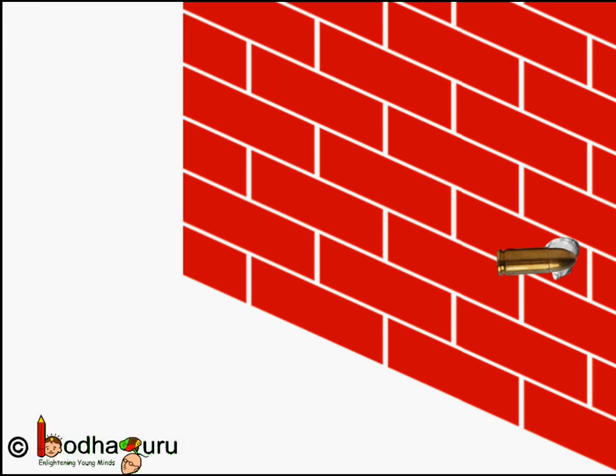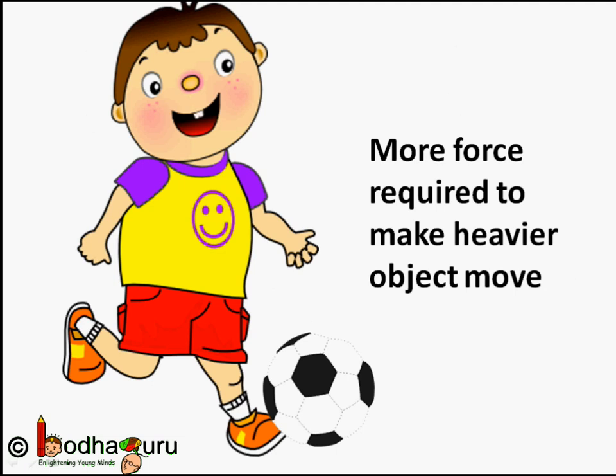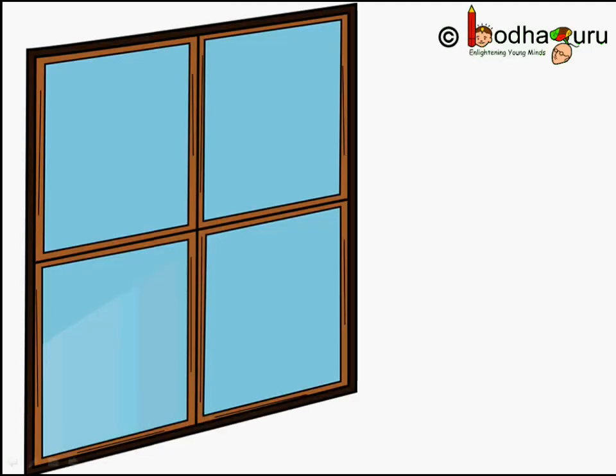Similarly, we need to put more force to make an object go faster. If you hit a ball harder, it will go faster. And if that ball is heavier, you would have to put more force. So, there must be a quantity that combines mass and velocity in such cases. Newton called that quantity momentum.